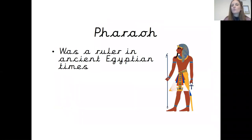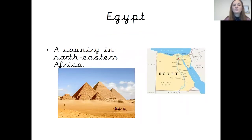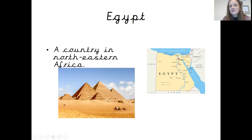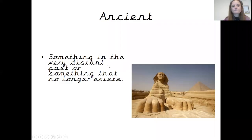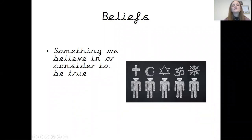A pharaoh was a ruler in ancient Egyptian times. Egypt is a country in northeastern Africa. From our hook lesson yesterday, it borders on Asia and has the sea on either side. Ancient — something in the very distant past, or something that no longer exists, is something we refer to as ancient. Beliefs — something we believe in or consider to be true is someone's beliefs.